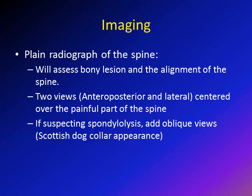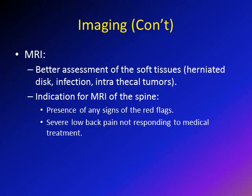After history and examination, the next step is imaging. Always start with plain radiographs of the spine — this gives an idea of bony lesions and spinal alignment. Take two views, anteroposterior and lateral, centered over the painful area. If spondylolysis is suspected, obtain an oblique view, which will show the defect more clearly. MRI offers better assessment of soft tissues compared to plain radiographs.